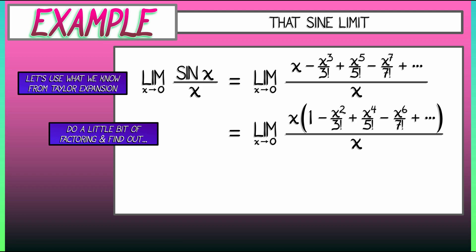Now that we've factored out an x from the numerator, we see that it cancels with the x in the denominator. And what are we left with? We're left with the limit as x goes to zero of 1 minus x squared over 3 factorial plus x to the fourth over 5 factorial, and a whole lot of other terms, all of which have higher order x.